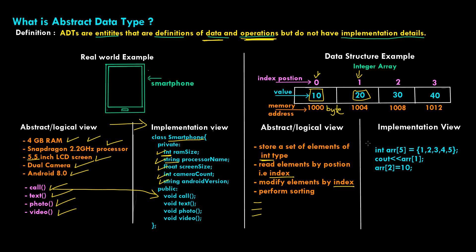Coming to the implementation side, this is how it looks in C++. The syntax would be 'int ARR' — creating an array of size 5 with elements 1, 2, 3, 4, 5. If I say 'cout ARR[1]' I want the value at index position 1, so the output would be 2. Then if I say 'ARR[2] = 10', the value at the third position changes from 3 to 10 — so I'm modifying it by using the index.